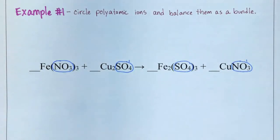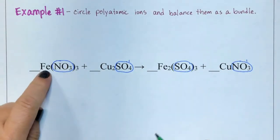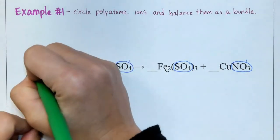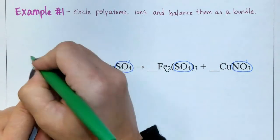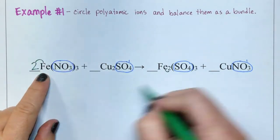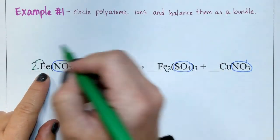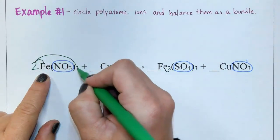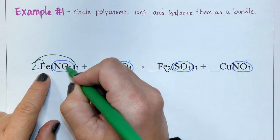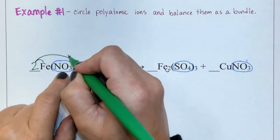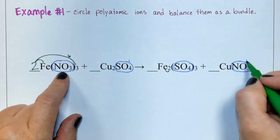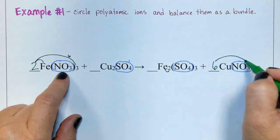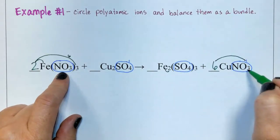So now we'll balance the coefficients. We have one iron on the left and two irons on the right. So to fix it, I'll put a coefficient of two here. Now we have two irons on the left and two irons on the right. We're going to multiply two times three equals six nitrates on the left. And on the right, we only have one nitrate, so a coefficient of six would give me six times one is six nitrates on the right.